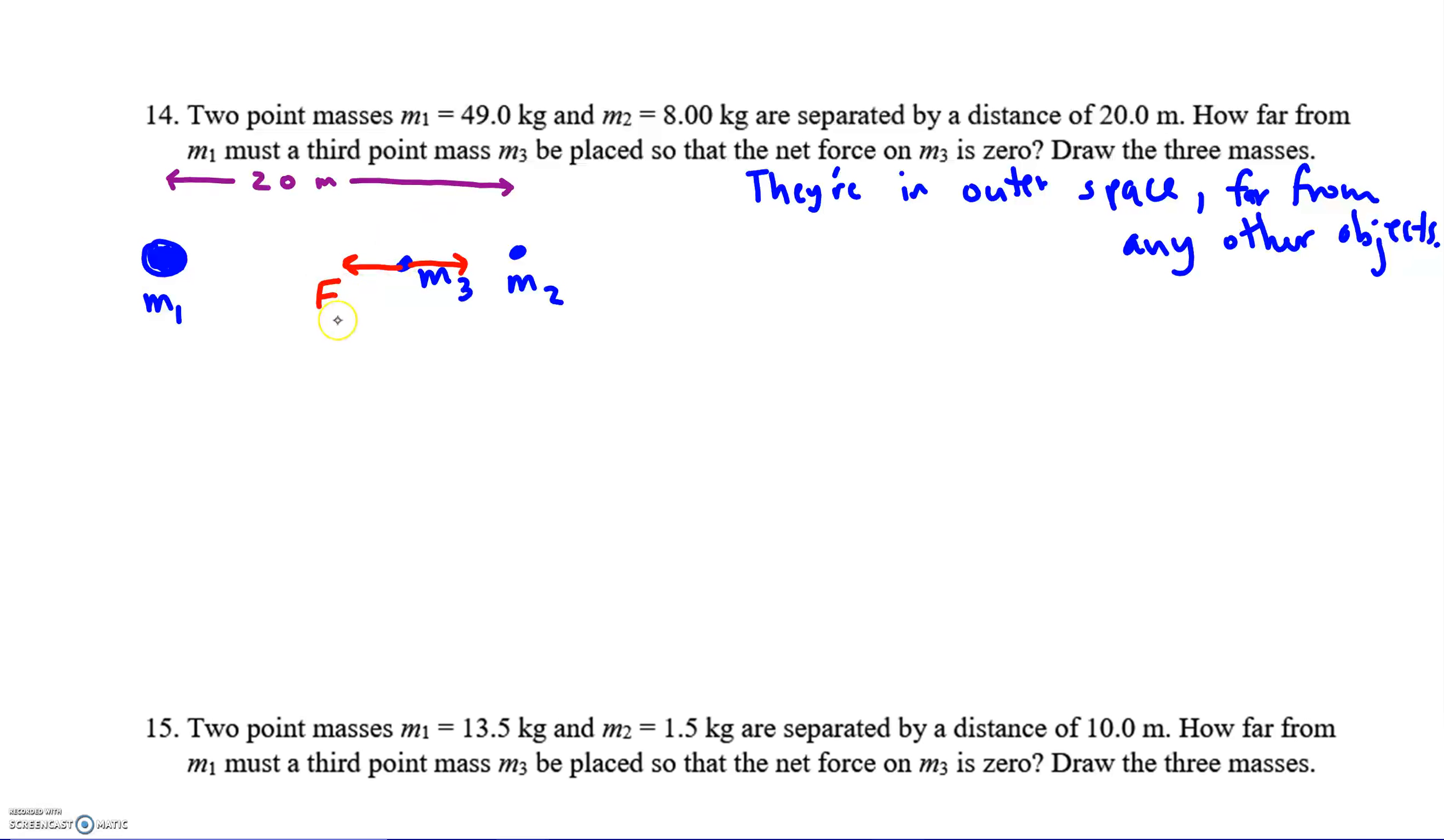I'll call this F13, the force between masses one and three. And this other right arrow, I'll call F23. Now I can write in some distances. This is R13, and over on the other side we have the distance between two and three. We've set up this distance, we've placed M3 so that the two forces are equal.